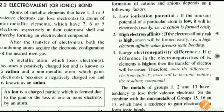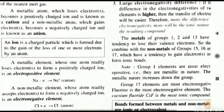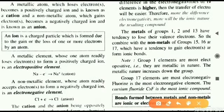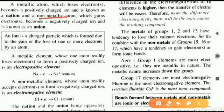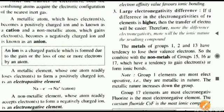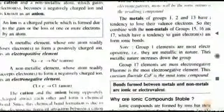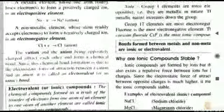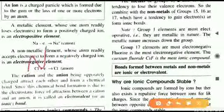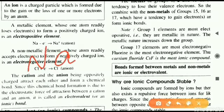If any atom has five, six, or seven valence electrons, it will gain electrons. As a result, charges develop. If a metal atom loses electrons, a positive charge forms and the ion is called a cation. If a non-metal gains electrons, it becomes negatively charged and is called an anion. The question is why positive and negative charges arise.